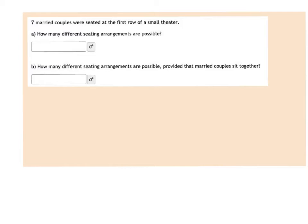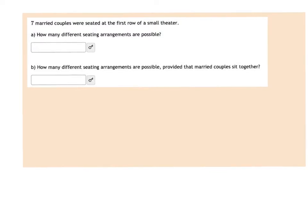Seven married couples were seated at the first row of a small theater. If there are seven couples, there's two people per couple, so it would be seven times two, which equals 14. We're going to seat all of these people, so anytime you want to arrange all of the people in a group, that's where you use factorial. So this would be 14 factorial.